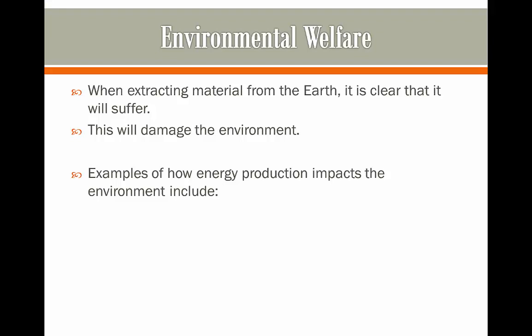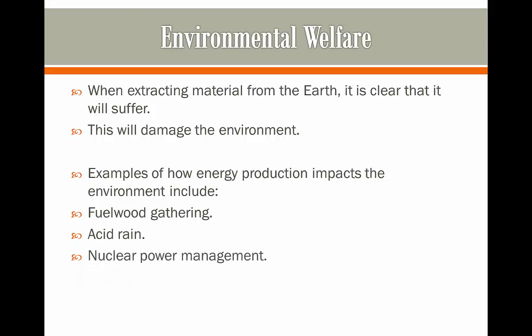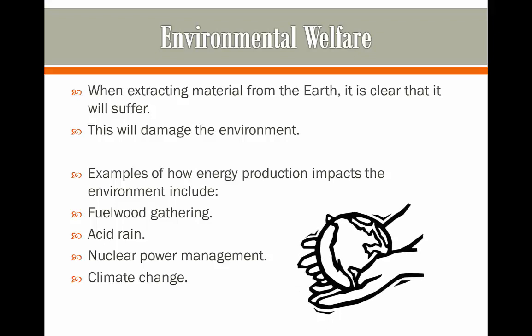Examples of how energy production impacts the environment include the use of fuel wood gathering, acid rain, and nuclear power management, as well as climate change. Climate change is probably what happens when all of these effects — from the use of fuel wood, acid rain, and nuclear power — actually result in occurring. So we have to look and take good care of our planet in order for it to prosper.